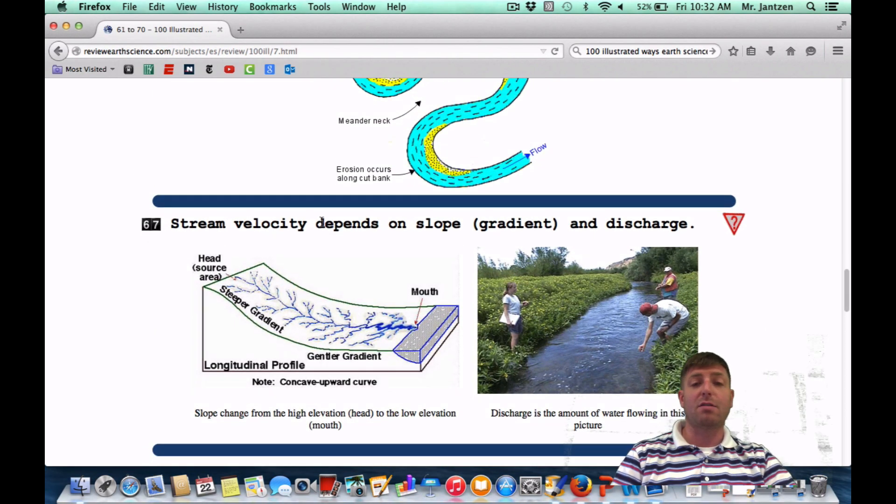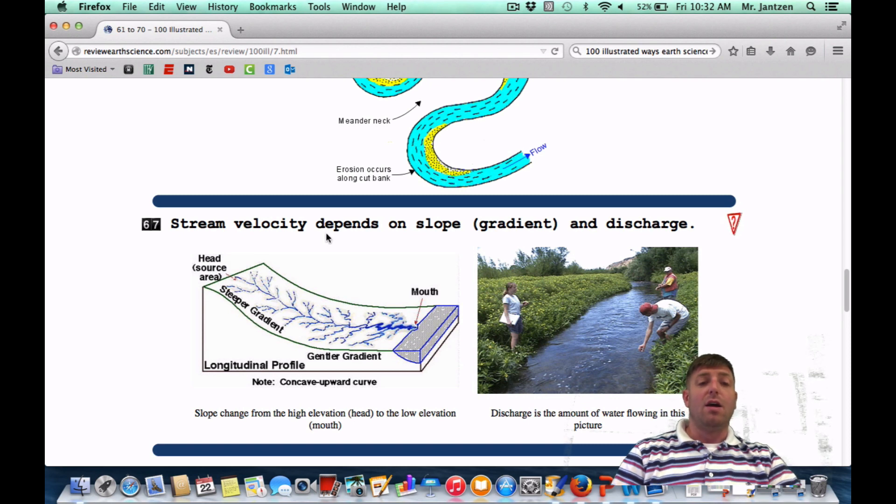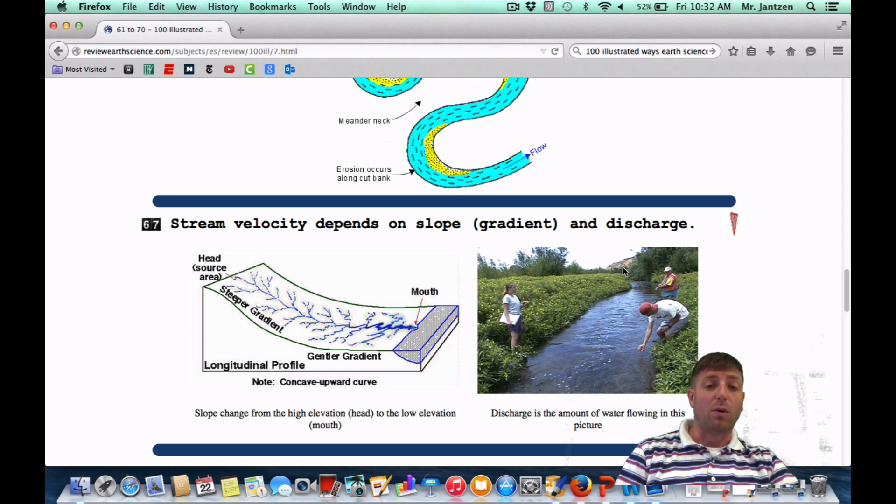Number 67: Stream velocity depends upon slope and discharge. What's going to determine how fast the stream goes? Well, how much water is in it and basically the slope, or water going through it. This is kind of showing you your slope. The steeper it is, the faster it's going to go. And this is showing you how much water is going through it. So the more water coming out of the stream and the greater the slope, the greater the velocity.